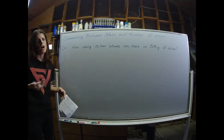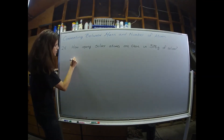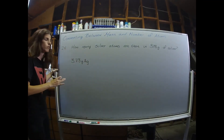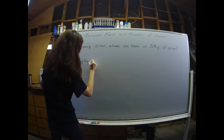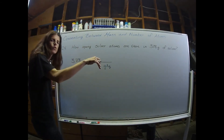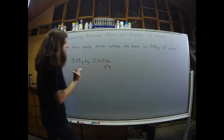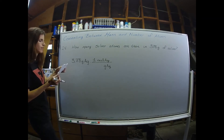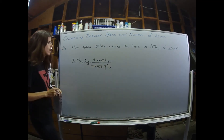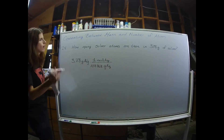In the previous problem I set up the conversion factors ahead of time, but chemists typically set them up on the fly. Starting with 3.78 grams of silver, I know I need to get rid of grams and go to moles first because moles is the bridge to wherever you want to go. From the periodic table the molar mass of silver is 107.868, so grams of silver cancel out.